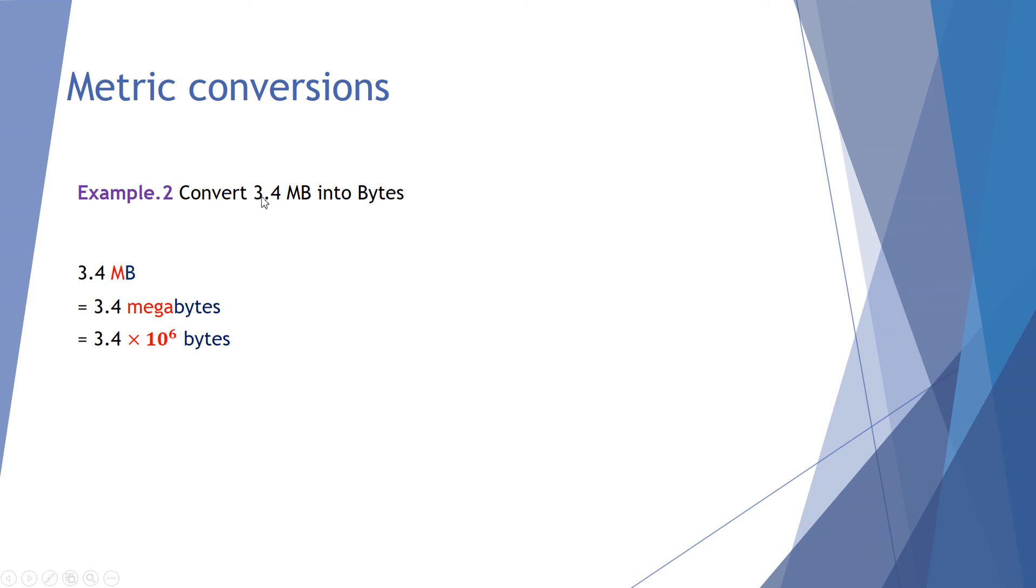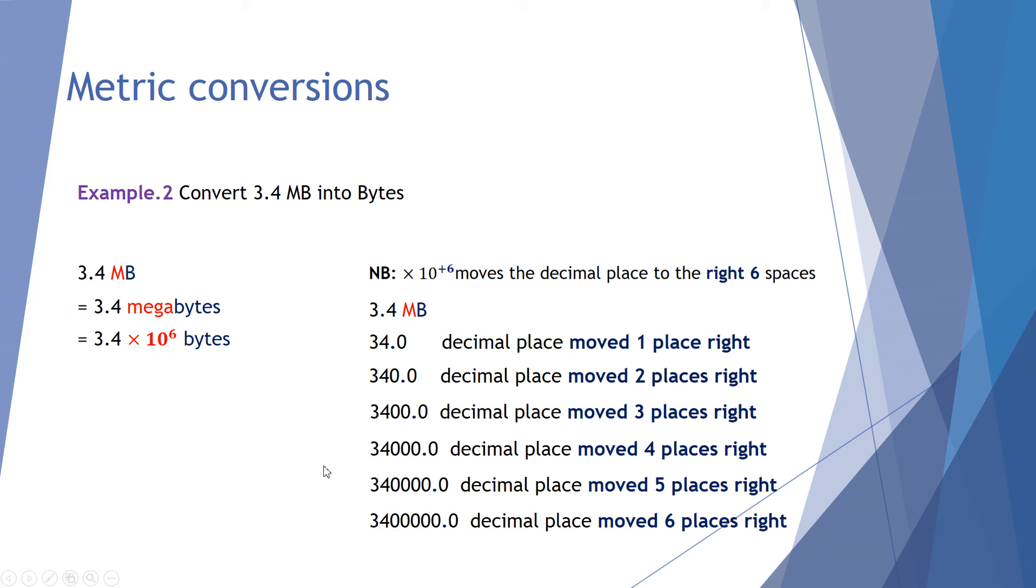Next example, if we want to convert 3.4 megabytes into bytes. Now we know megabytes are million bytes, so this is going to be quite a large number. Megabytes, we write that as a word, is megabytes. Now mega means by 10 to the 6. So we need to move a decimal place six moves this time to the right. So 3.4 moving it once becomes, moving it here becomes 34, twice 340, 3, 4, 5 and 6. Okay, so it ends up being 3.4 million bytes or 34 with five zeros. Looking at this, what we've done is moved our decimal place to the right one two three four five six. That's how we make that conversion.